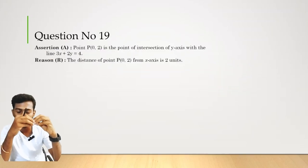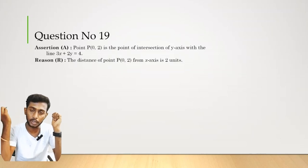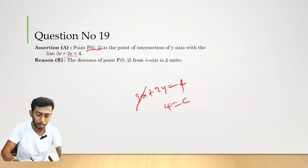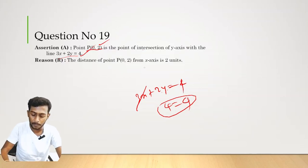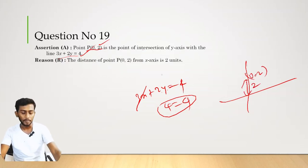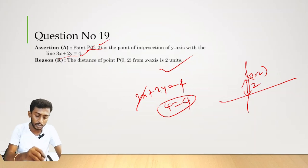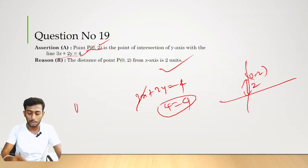Question number 19. Assertion-Reason question. Assertion: Point P(0, 2) is the point of intersection with the line 3x + 2y = 4. Check: 3(0) + 2(2) = 4. Yes, correct. Reason: The distance of (0, 2) from the x-axis is 2 units — also correct. But the reason is not a correct explanation of the assertion. Therefore option B is the correct answer.